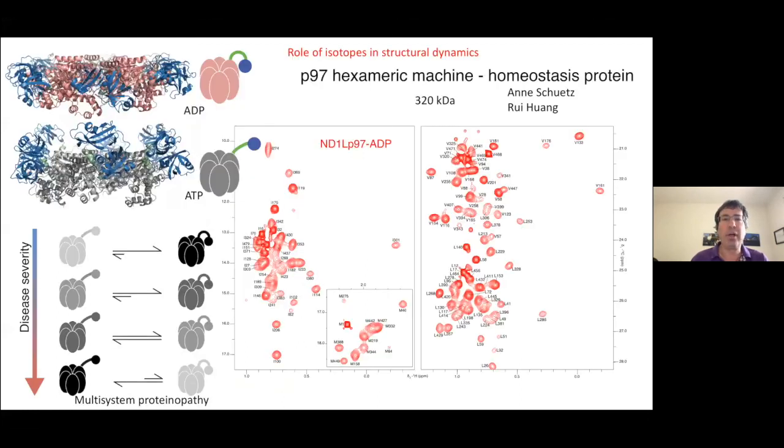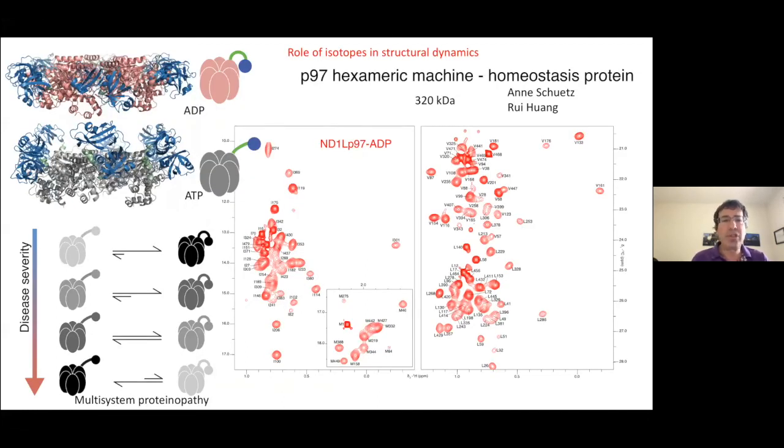And so this slide here just illustrates the roles of isotopes in structural dynamics working on supramolecular systems, in particular, P97, which is a hexameric machine. It's a homeostasis protein. We look at a version of it often that's 320 kilodaltons in molecular weight. We're able to produce ILV-labeled, also methionine-labeled proteins. These are pro-R-labeled systems, so we're able not only to generate C13H3 labels in our system, but at the pro-R position or the pro-S positions, these can now be purchased, the precursors that are involved there.